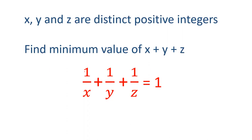An interesting question, friends. x, y, and z are distinct positive integers. x, y, and z are not equal—they are distinct, they are positive. We have to calculate the minimum value of x + y + z.